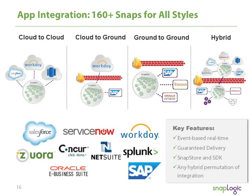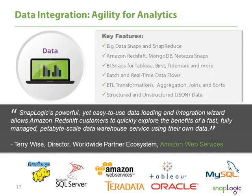On the application side, we have over 160 SNAPs that allow you to handle any sort of permutation, pattern, or integration style — cloud-to-cloud, cloud-to-ground, ground-to-ground, and hybrid. We have a lot of customers running Workday, ServiceNow, and Salesforce — those would be the big three on the SaaS application side. More often than not, they're still connecting to on-premises systems like SAP and Oracle eBusiness Suite.